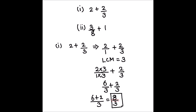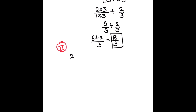This was the first method. Let us try the second method. Our question is 2 plus 2 upon 3. Here we can write 2 as a mixed fraction. 2 is 1 plus 1 plus 2 upon 3, and this 1 plus 1 can be written as 1 whole.